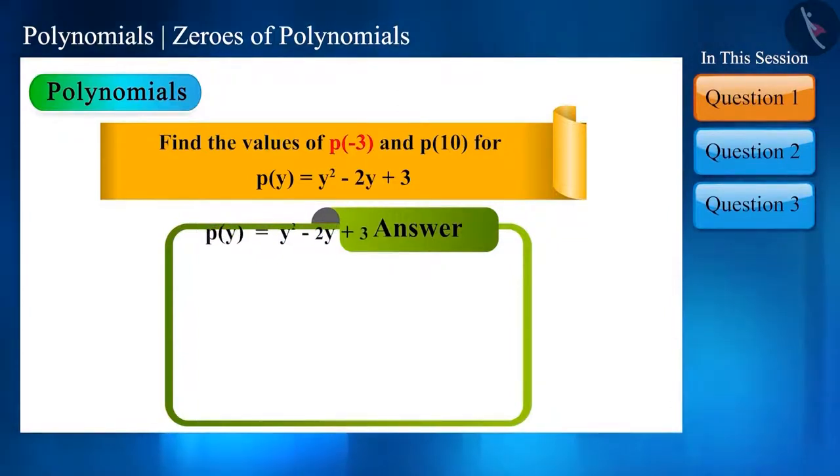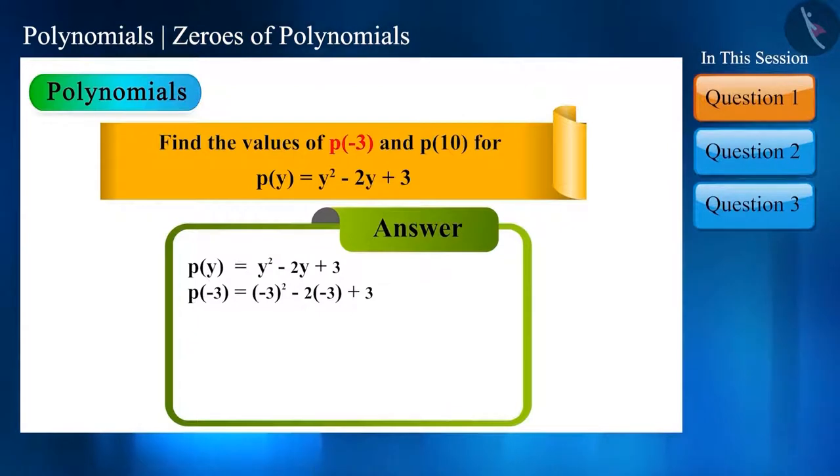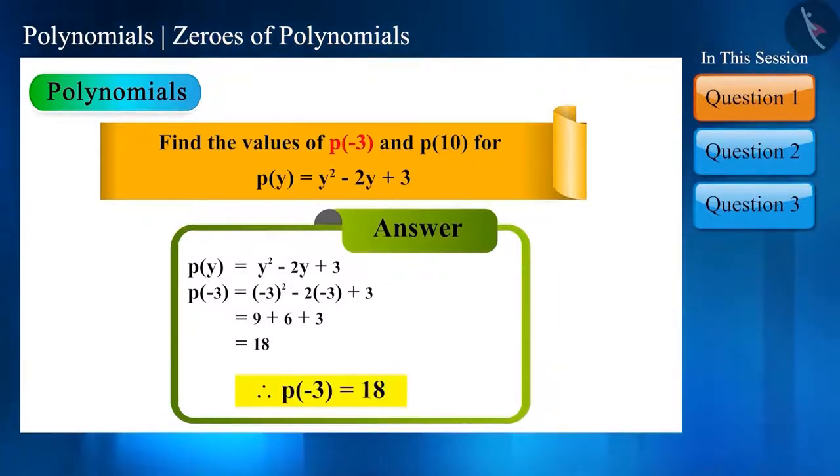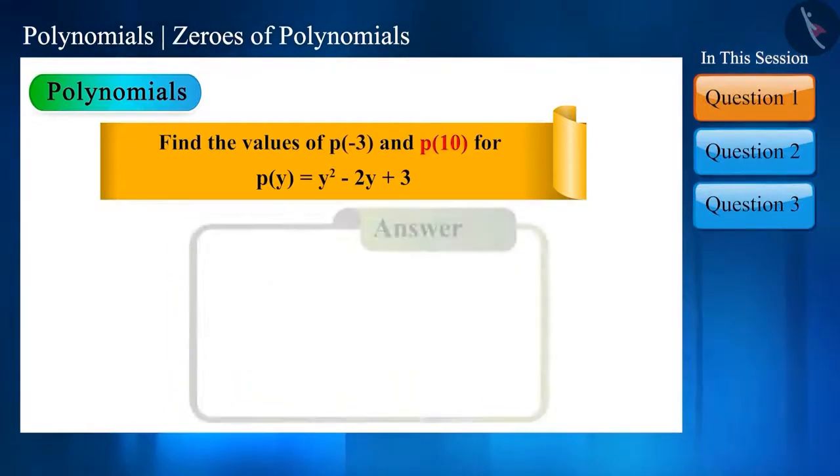So here the value of p of minus 3 will be minus 3 square minus 2 into minus 3 plus 3, equal to 9 plus 6 plus 3, which is 18.